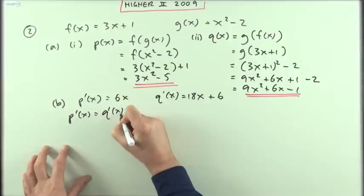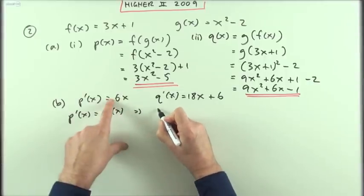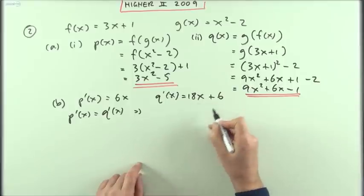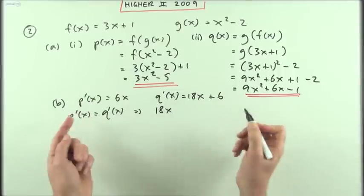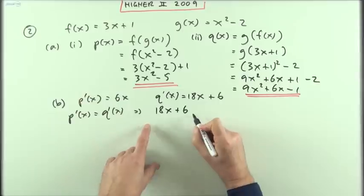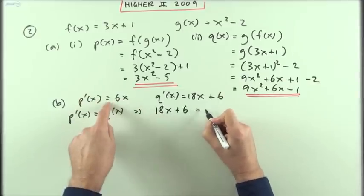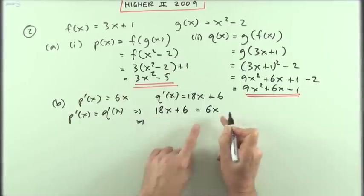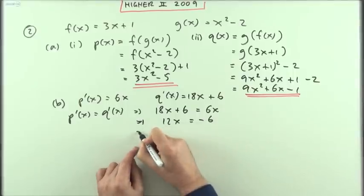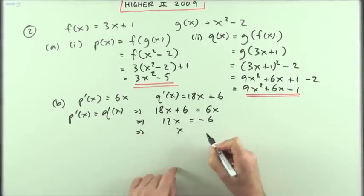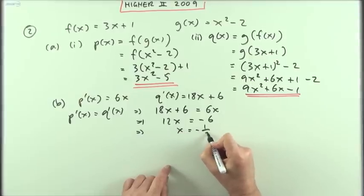If p'(x) equals q'(x), that means 6x equals 18x plus 6. I'd rather write that the other way round: 18x plus 6 equals 6x. Bringing the 6x over gives 12x equals negative 6, so x equals negative one half.